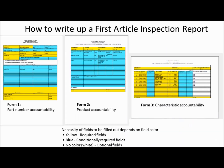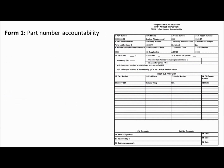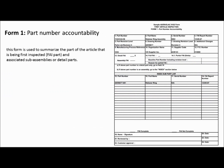How to write up a first article inspection report step by step. Form 1, Part Number Accountability, is used to summarize the part of the article that is being first inspected, such as the FAI part and associated sub-assemblies or detail parts.